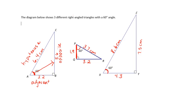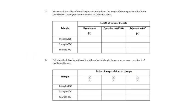Let's fill those in. For triangle ABC the hypotenuse is 6.4, for the smallest triangle it's 3.7, and for the largest it's 8.6. For the opposite side: triangle ABC is 5.6, triangle PQR is 3.2, and triangle XYZ is 7.5. For the adjacent sides — all touching the 60-degree angle — the first triangle is 3.2, the next is 1.9, and the final is 4.3.